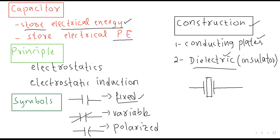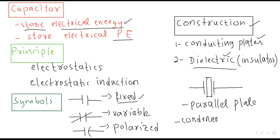Different mediums کی different properties ہوتی ہیں جسے permittivity کہتے ہیں۔ Dielectric کے لیے کچھ اور permittivity ہوگی، air کے لیے کچھ اور، اور free space کے لیے کچھ اور۔ یہ parallel plate capacitor کہلاتا ہے اور capacitor کو condenser بھی کہہ سکتے ہیں۔